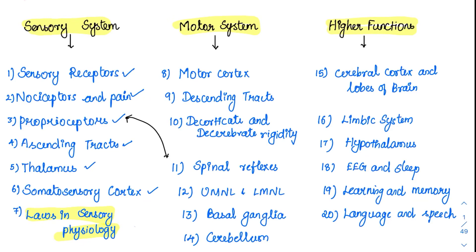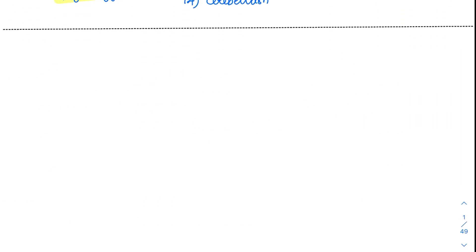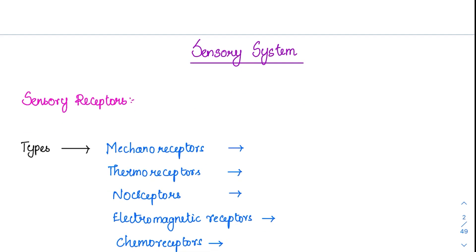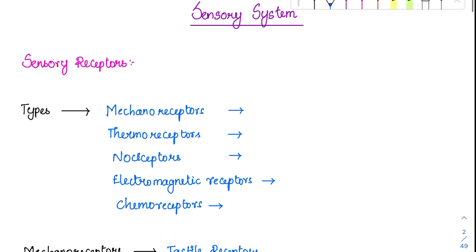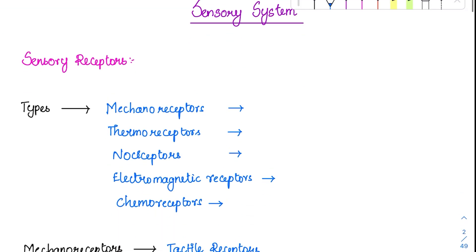Let's start with our sensory system. The first topic is the sensory receptors. Coming to our sensory receptors, the major classification of sensory receptors are as follows.